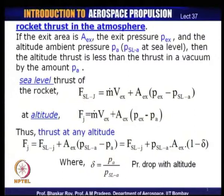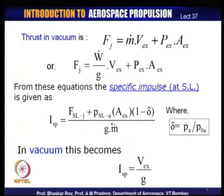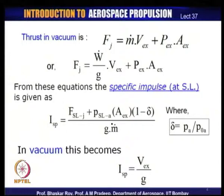In vacuum, ambient pressure P_A is taken as zero, so the thrust equation becomes F_j equals M-dot times V_Ex plus P_Ex times A_Ex — the ambient pressure term disappears. Since most rocket thrust is expressed in terms of weight flow rather than mass flow, the thrust equation is rewritten using W-dot (weight flow), where W-dot divided by G gives the mass flow, slightly modifying the first term.